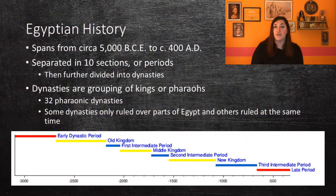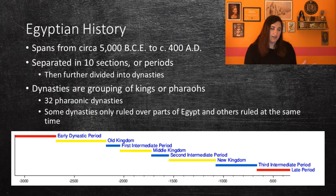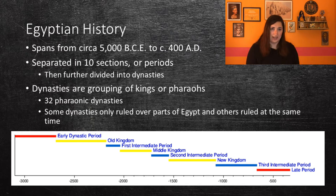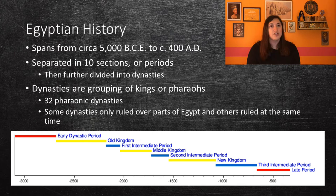Egyptian history spans over 5,000 years, going from 5,000 BCE to 480. BCE is before the year 1, so the years will actually go backwards, from 5,000 to 4,000, and so on. From AD onward, the years will continue going forward from 1 to 2 to 3, etc. So the Egyptian civilization is about 7,000 years old.